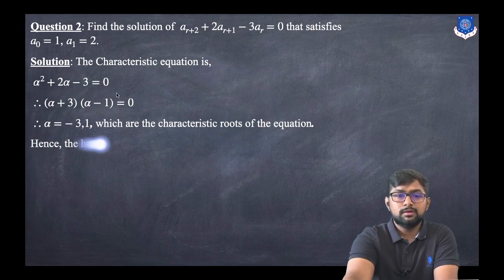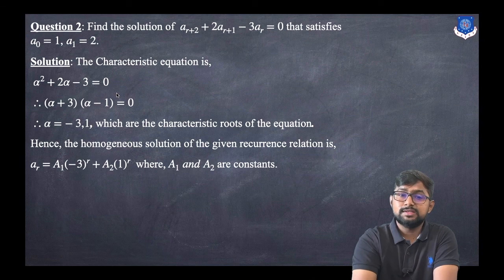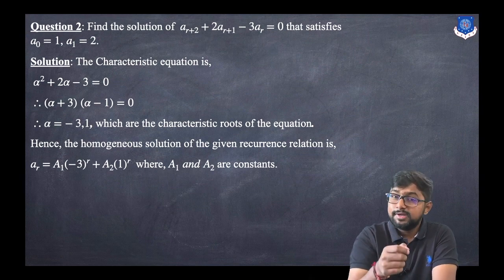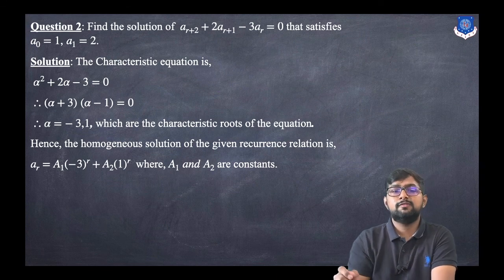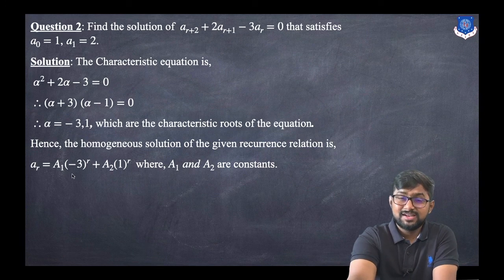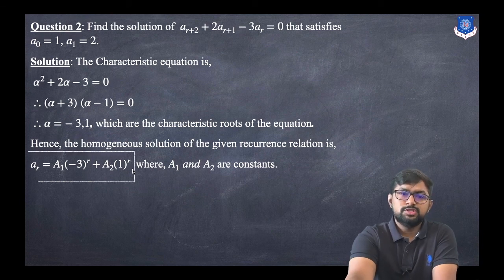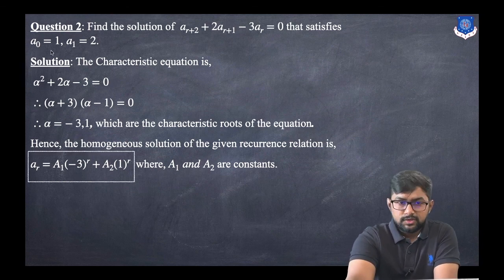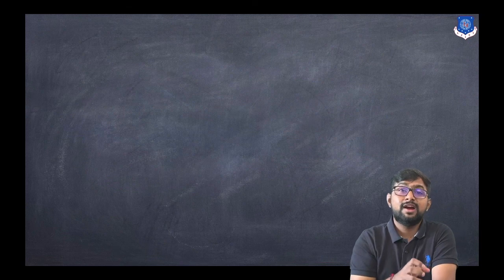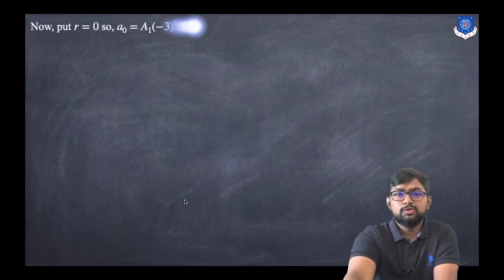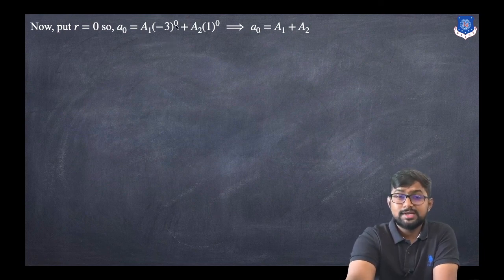Since the roots are distinct, the homogeneous solution is: a_r = a_1 * (-3)^r + a_2 * 1^r, where a_1 and a_2 are constants. Now we use the initial conditions a_0 = 1 and a_1 = 2 to find a_1 and a_2. Putting r = 0: a_0 = a_1 * (-3)^0 + a_2 * 1^0 = a_1 + a_2. So a_1 + a_2 = 1.